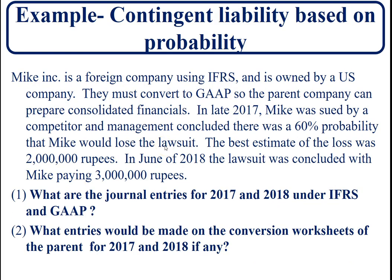Now let's take a look at an example. In this case, Mike Inc. is a foreign company owned by a U.S. company and they must convert to GAAP because they're doing consolidated financials. In late 2017, Mike was sued by a competitor and management concluded there was a 60 percent probability that the company would lose the lawsuit. The best estimate — they didn't have a range, just a single amount — was two million rupees. In June of 2018, the lawsuit was concluded with Mike paying three million rupees. The question is: what would the journal entries look like under the international standard versus GAAP, and what would be the working paper entries to record this difference?